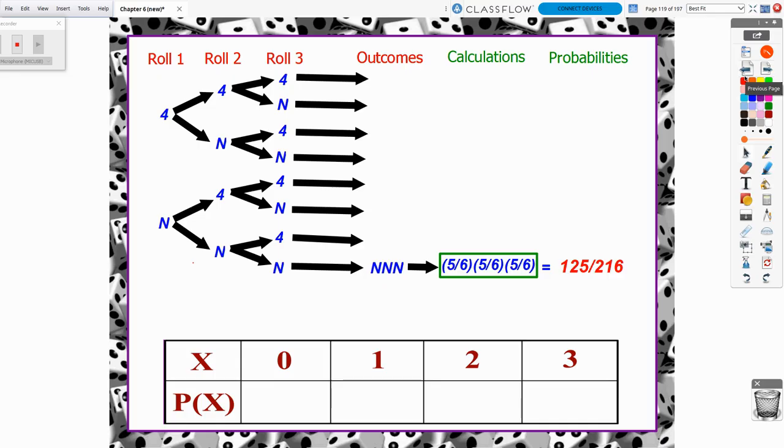Let's find the pattern within our tree diagram. So first, I'm going to start with the x equals 0 scenario. And in x equals 0, we did not roll any fours. We did not roll a four, did not roll a four, did not roll a four. And in our tree diagram, that was only this one situation down here.